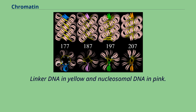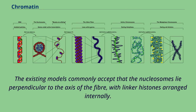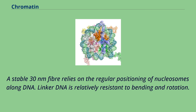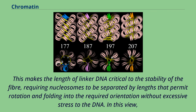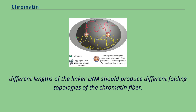Four proposed structures of the 30 nanometers chromatin filament for DNA repeat length per nucleosome ranging from 177 to 207 bp, with linker DNA in yellow and nucleosomal DNA in pink. The existing models commonly accept that the nucleosomes lie perpendicular to the axis of the fiber, with linker histones arranged internally. A stable 30 nanometers fiber relies on the regular positioning of nucleosomes along DNA. Linker DNA is relatively resistant to bending and rotation, making the length of linker DNA critical to the stability of the fiber.